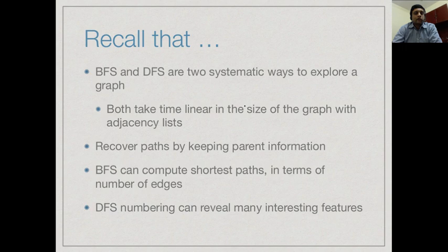When we explore a graph using BFS or DFS from a given vertex, we discover which vertices are connected to the start vertex and can recover the path back by keeping extra information such as the parent of each node visited. Breadth-first search, because of its layer-by-layer strategy, uncovers the shortest distance to every vertex in terms of number of edges. Depth-first search, though it doesn't find the shortest path, gives us structural information through the pre and post DFS numbering.